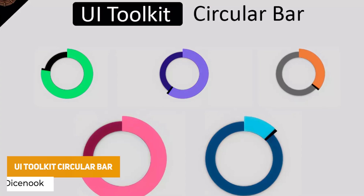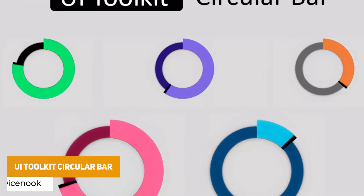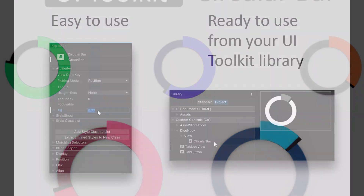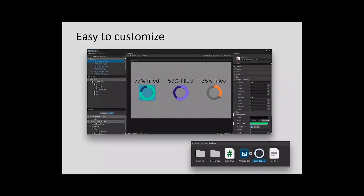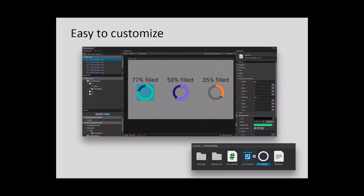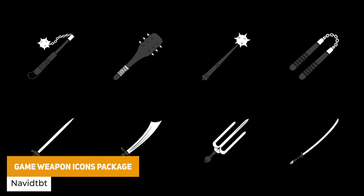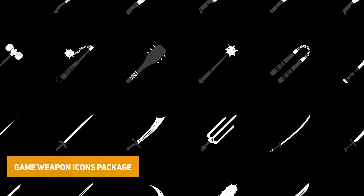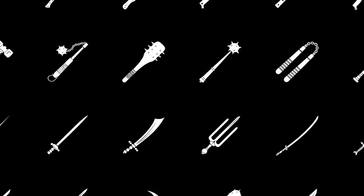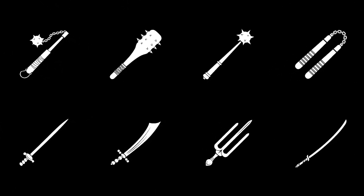We've got another UI Toolkit asset — the circular bar — which allows you to create smooth circular bars, whether you need that for loading or for an interaction technique in your game. You can do various colors, sizes and shapes and they're really slick. We've also got the game weapons and icon package, which is 60 different weapons and icons in various forms — white on black, black on white, or a slightly more detailed look — and they're all atlased.